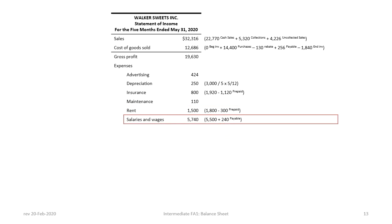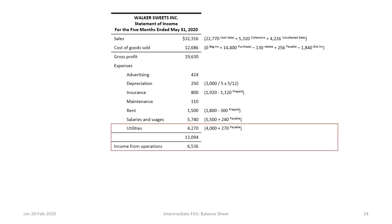Salaries and wages is calculated to be $5,740, based on $5,500 paid plus $240 payable to employees at end of the five-month period. Utilities expense totals $4,270, comprised of $4,000 paid in cash plus $270 payable. At this point, are you able to determine whether this multi-step income statement is prepared on the basis of nature or function? If you answered by nature, you would be correct, as the statement does not break out expenses by business function such as selling or administration.